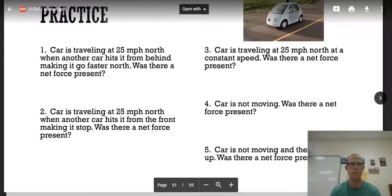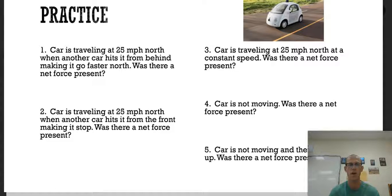All right, so let's practice a few things. A car is traveling at 25 miles per hour north. When another car hits it from behind, making it go faster north. Was there a net force present? So think about its motion, its movement. Did it change? If it's going at the same speed 25 miles an hour the entire time, there would be no net force. But because there was a car that hit it from behind, making it go faster, that means yes, there was a net force.